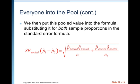We then put this pooled value into the formula, substituting it for both sample proportions in the standard error formula. So the standard error pooled of P hat 1 minus P hat 2 is equal to the square root of P hat pooled times Q hat pooled over N1 plus P hat pooled times Q hat pooled over N2.